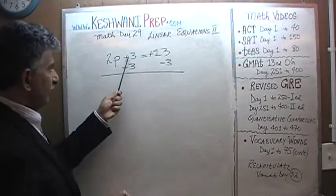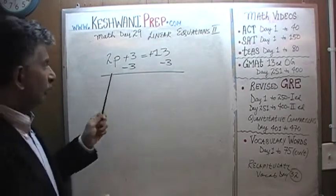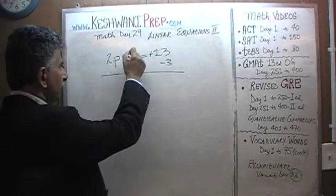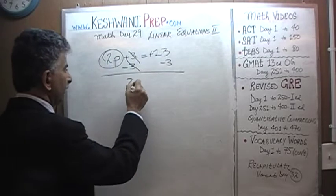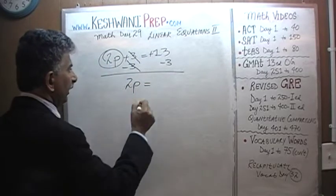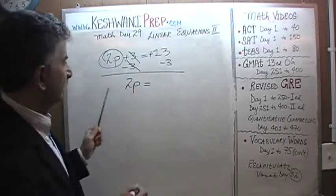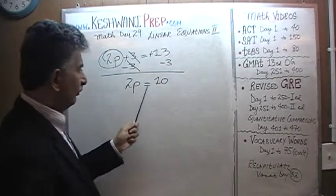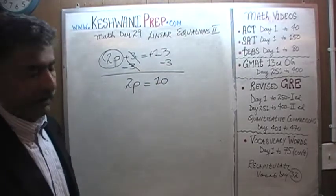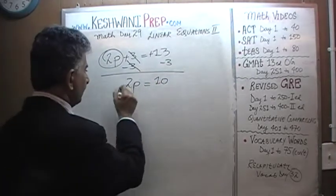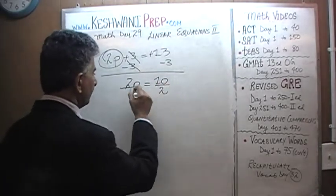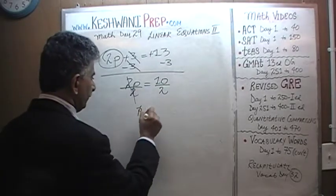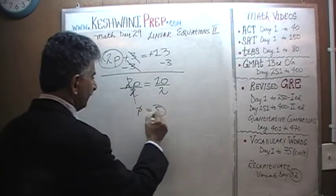Here a positive 3 and a negative 3. When we subtract 3 from both sides, the positive 3 is going to cancel the negative 3 and we end up with 2P on this side. And on that side we have 13 minus 3. 13 minus 3 is 10. Now we have 2P is equal to 10. Divide both sides by 2.